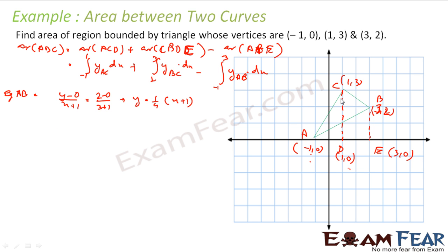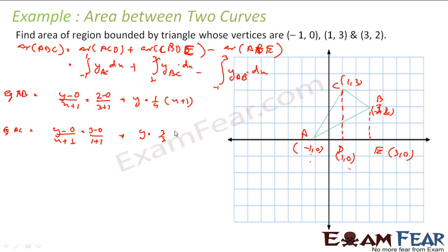Now let us find the equation of line AC. Taking the two points (minus 1, 0) and (1, 3): Y minus 0 divided by X minus (minus 1) equals (3 minus 0) divided by (1 minus (minus 1)), which simplifies to Y equals (3/2)(X plus 1).